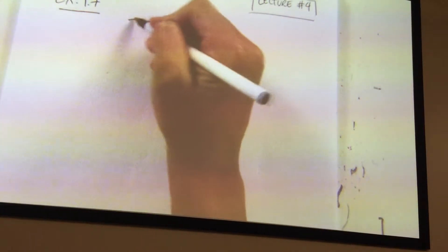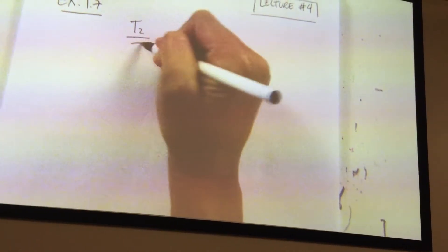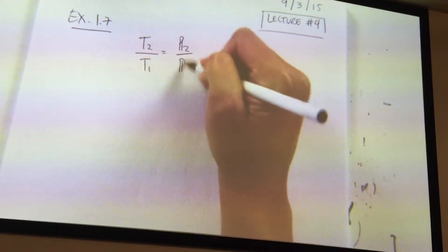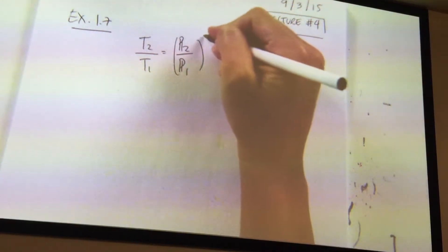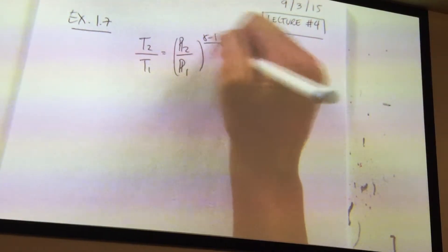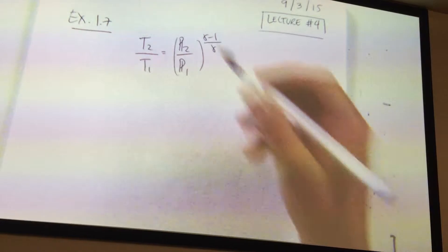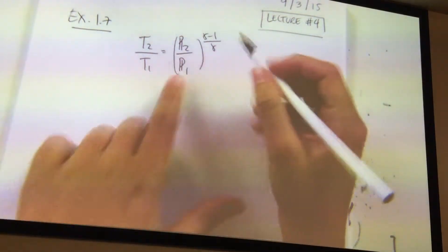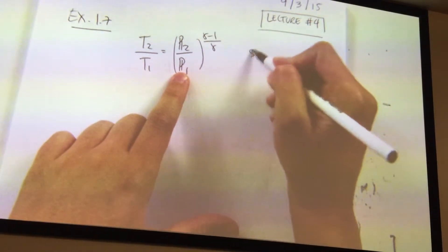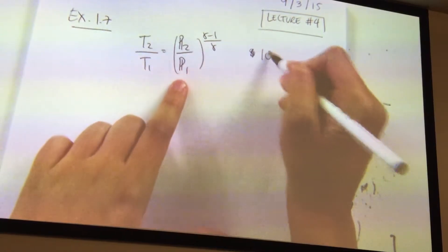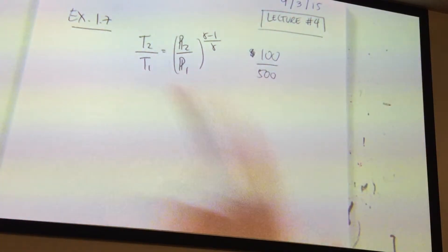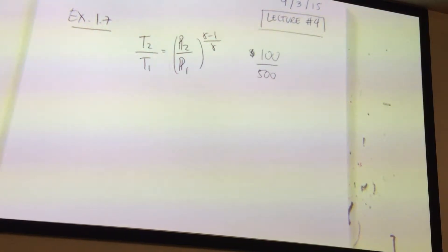These are right. It's just that P2 over T1 equals P2 over P1, gamma minus 1 over gamma. All of that is right. Here is the opposite value — P2 is 100 and P1 is 500. I had it the opposite, but the actual calculation is right.